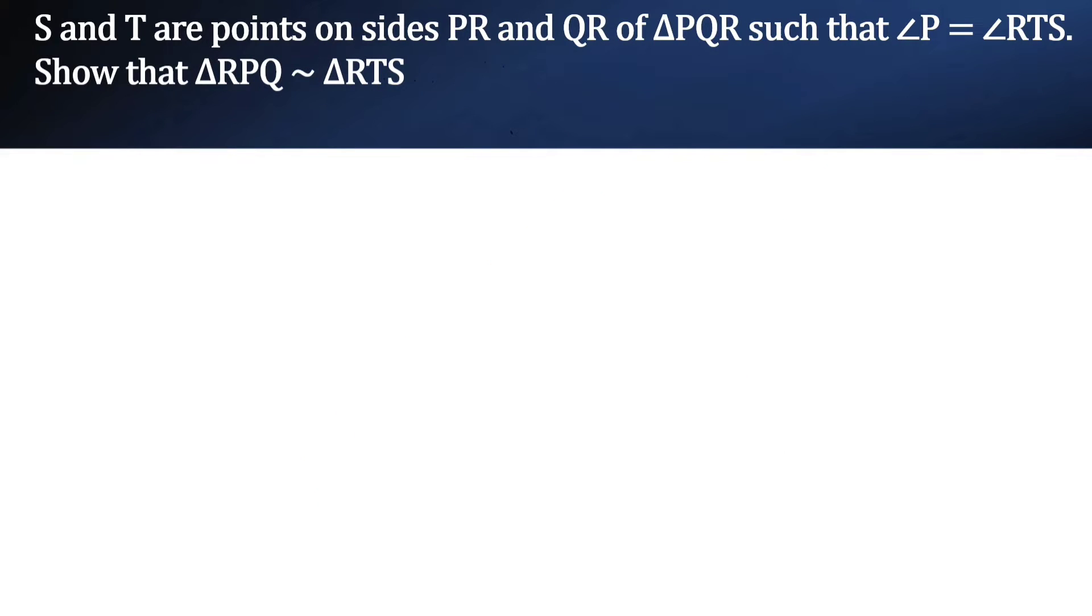S and T are the points on sides PR and QR of triangle PQR such that angle P is equal to angle RTS. Show that triangle RPQ is similar to triangle RTS.